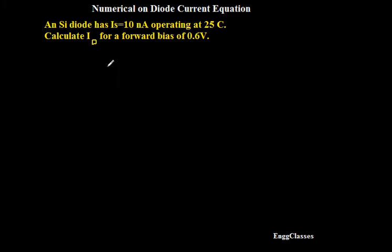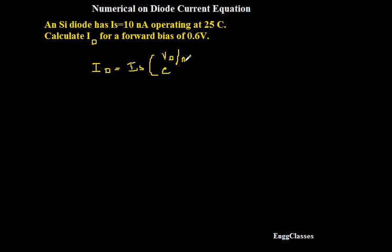So, how do I find the diode current ID? For that, I have the expression: ID equal to IS into bracket E to the power VD divided by eta into VT, minus 1. That is the expression.